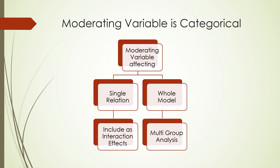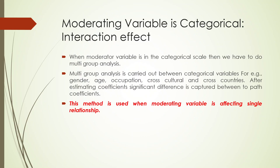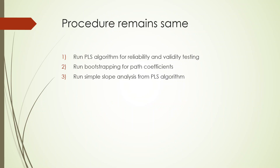Now, depending on the moderating variable — if it is affecting a single relation, you should include it as an interaction effect. If it is affecting the whole model, you will include it as a multi-group analysis. So this is the first method: when the moderating variable is only affecting a particular relationship, the effect is included the same as interaction effects. A new construct will come into existence, we have to run reliability and validity again, do bootstrapping, and run simple slope analysis from the PLS algorithm.